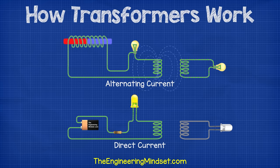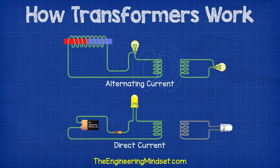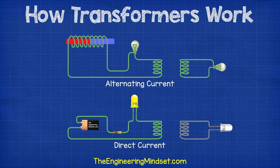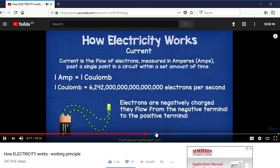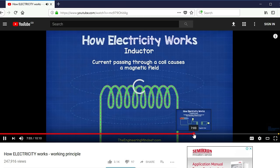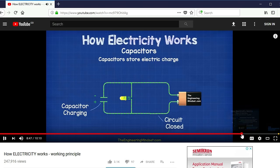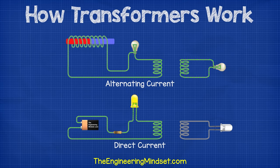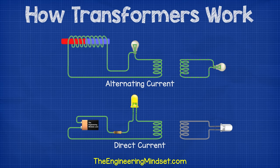Now there are two types of electricity, AC and DC, but transformers can only work using AC or alternating current. If you don't know the difference between these two, then please first watch the video on electricity basics. You can find links to these videos and other useful videos in the video description below.